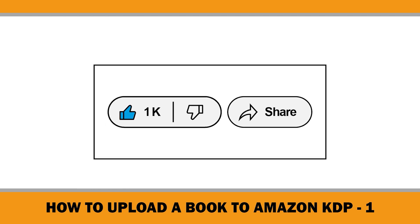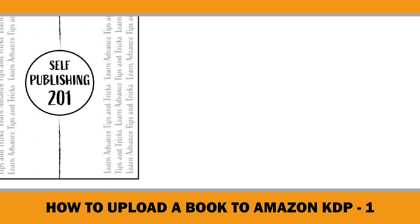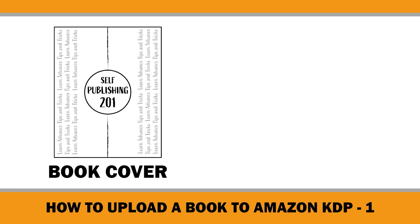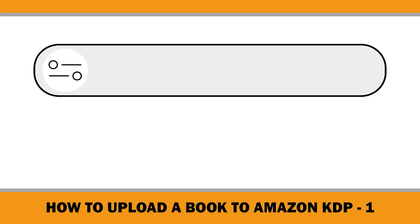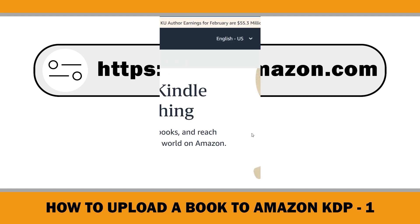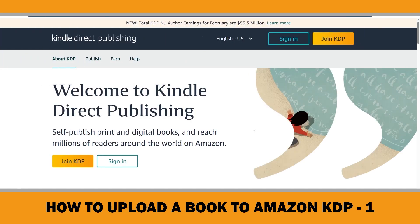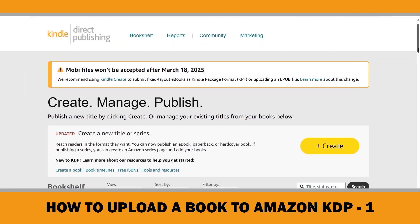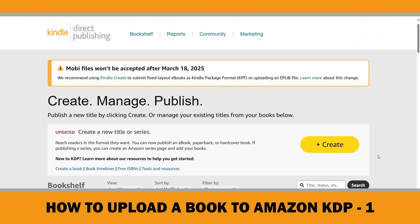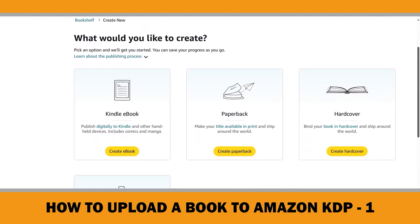First things first: ensure you have your book cover and a properly formatted manuscript before uploading your book to Amazon KDP. If you have all that ready, we can proceed with the upload. The first step is to visit kdp.amazon.com. If you already have an account, click Sign In; if not, click Join KDP to create one. Once you are signed in, your dashboard will look like this.